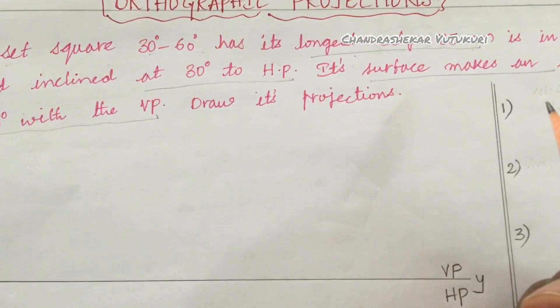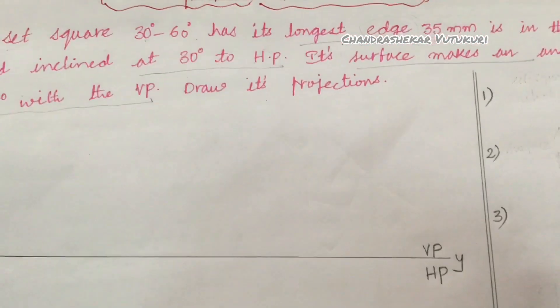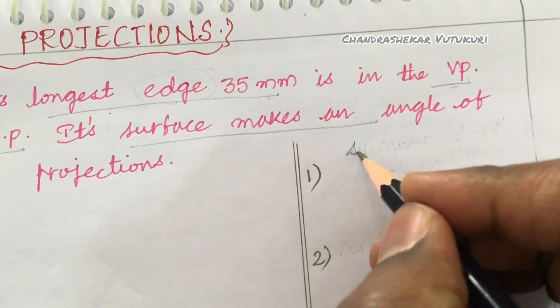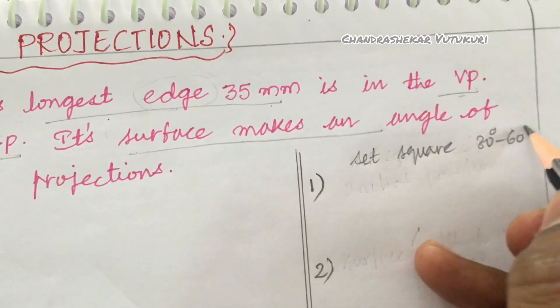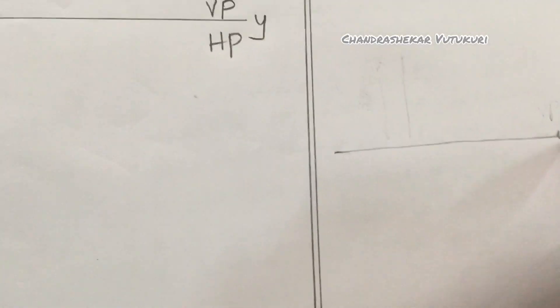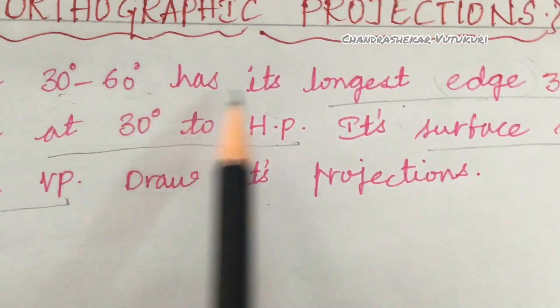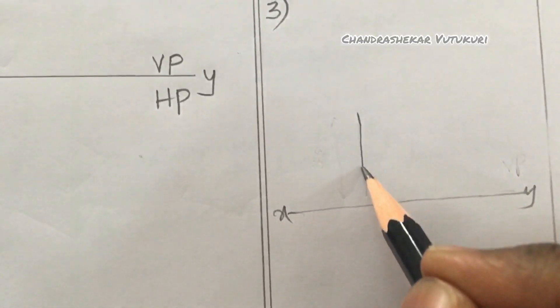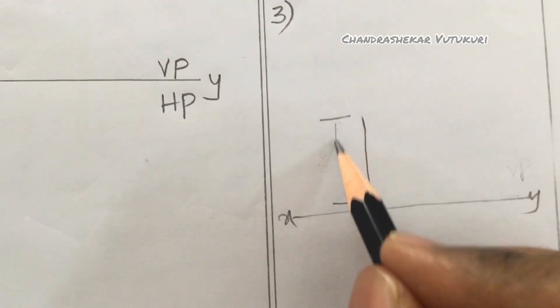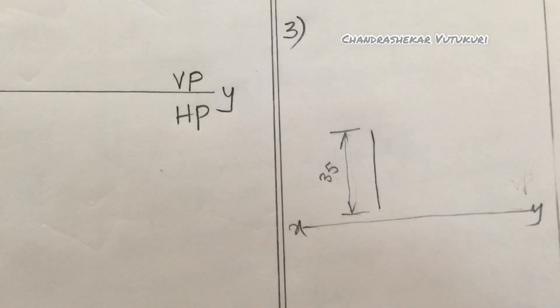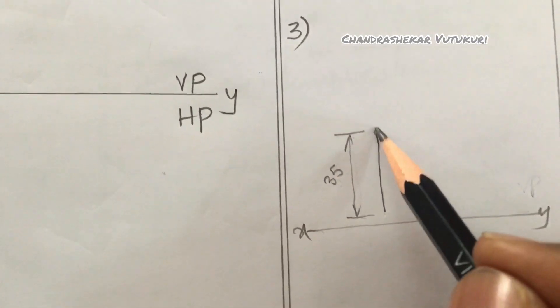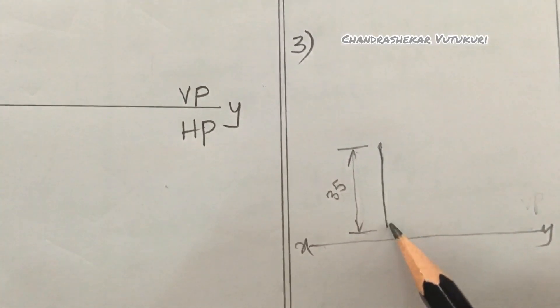Before working out this problem, we should know the given plane. The given plane is a set square of 30 degree and 60 degree combination. The set square has its longest edge of 35 mm in the VP. Let this be the longest edge, which is in the vertical plane and given as 35 mm.